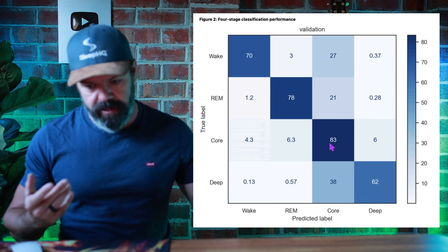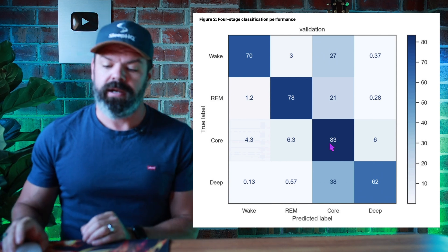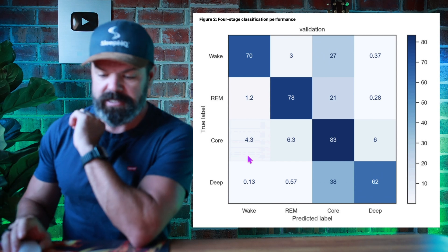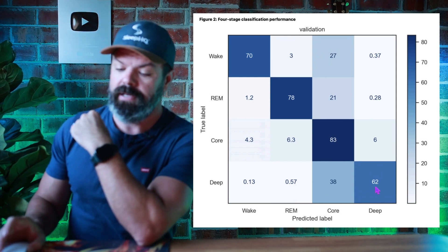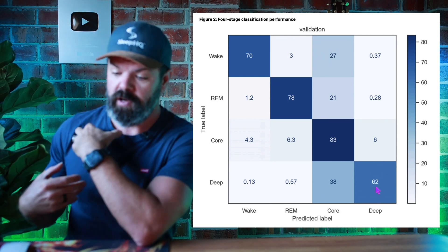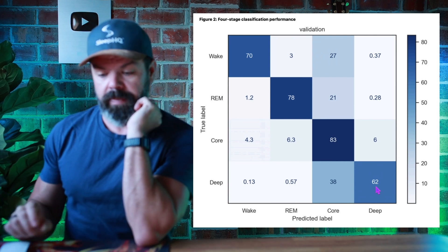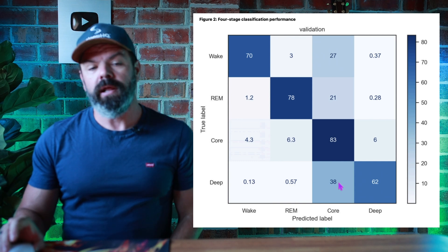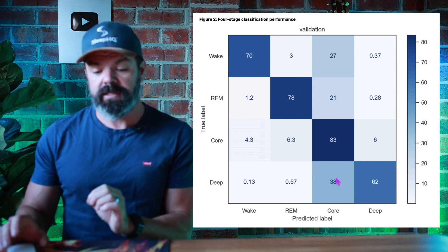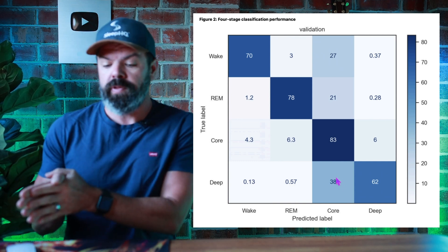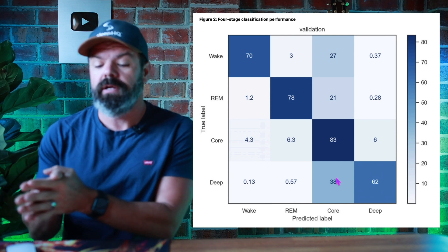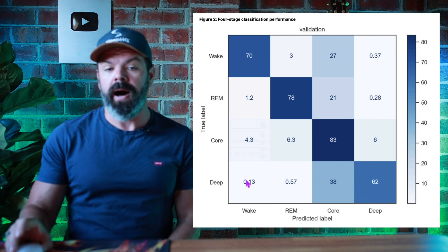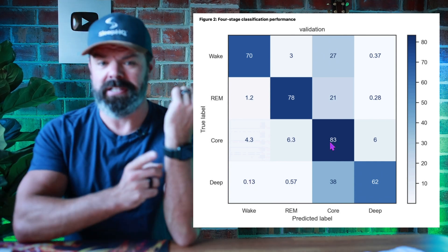Core sleep shows 83% alignment with the true label, with small chances of misclassification as deep, REM, or wake. Then we get to deep sleep, which drops off a little — 62% alignment — and a quite large 38% chance that the Apple algorithm will mark true deep sleep as core sleep. Very small chance of marking it as REM or wake.